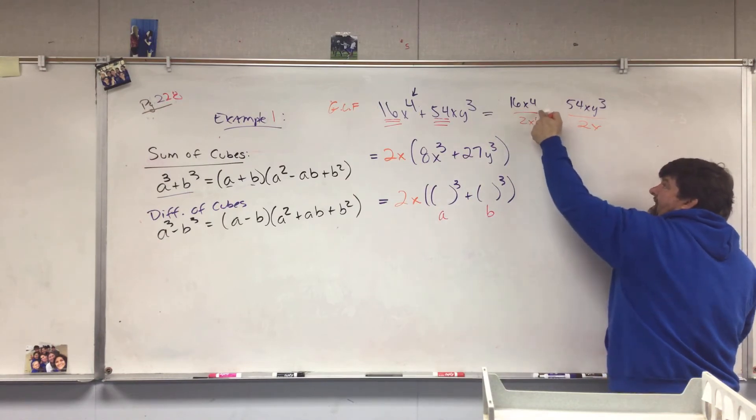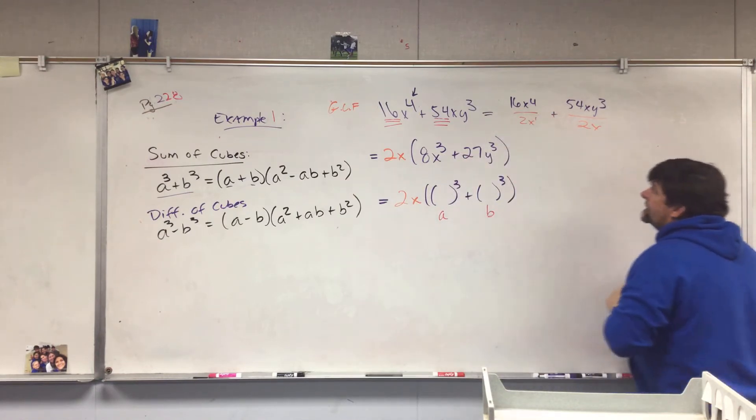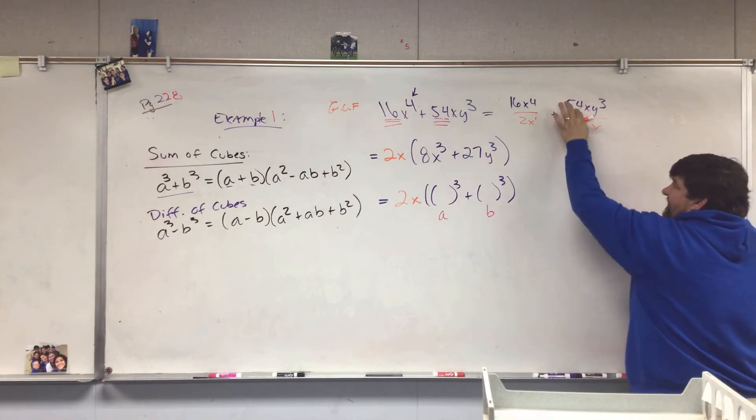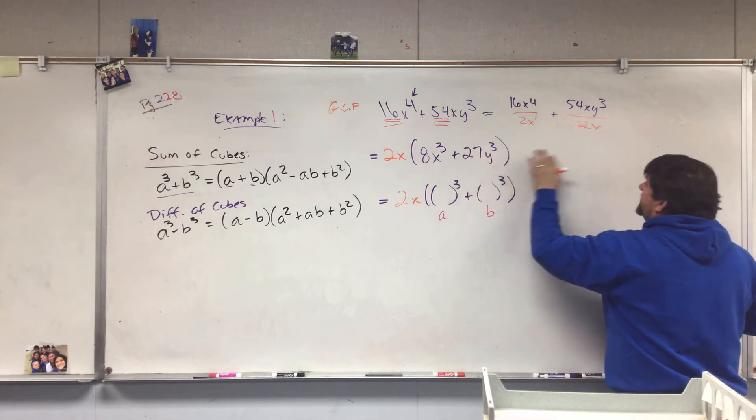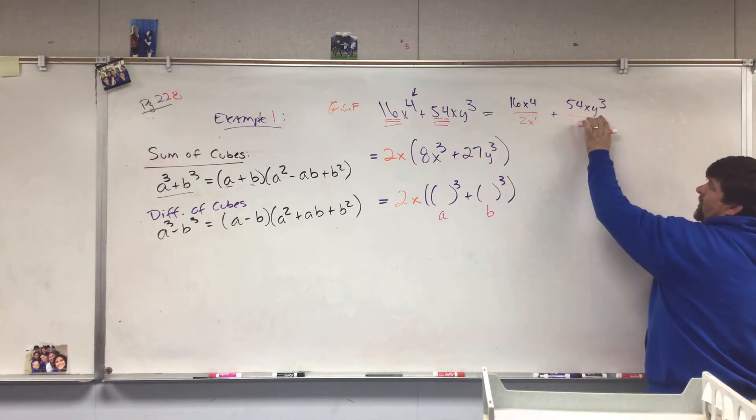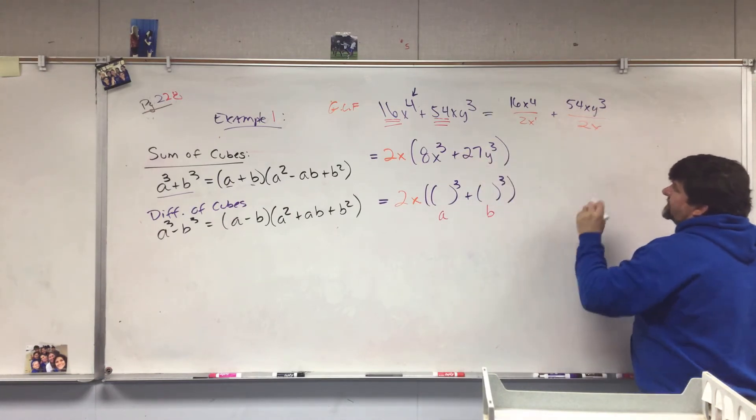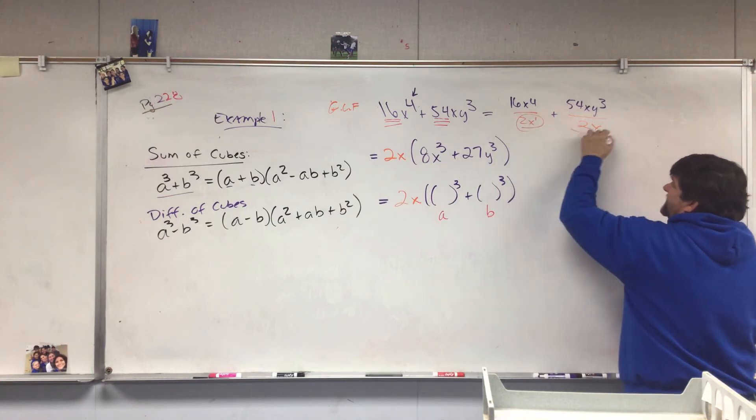54 divided by 2 is 27, X divided by X, the X disappears, simplifies out to 1, and we have Y³. So then we take the greatest common factor and we move it out front.